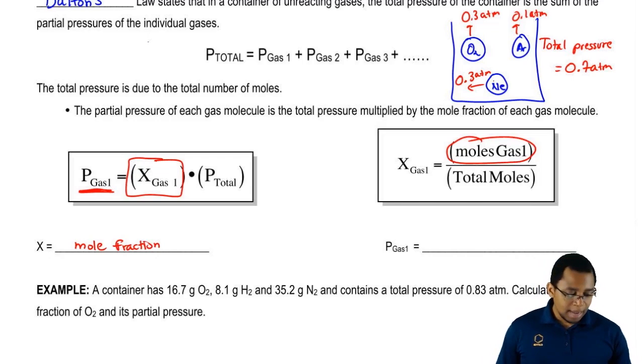If we're looking for, for example, the mole fraction of neon gas, it'd be the moles of neon divided by the moles of oxygen, argon plus neon on the bottom. That would give us the mole fraction of neon.